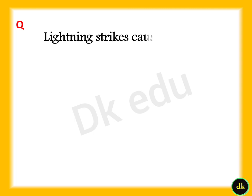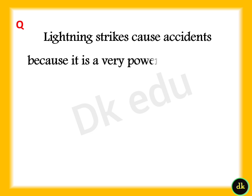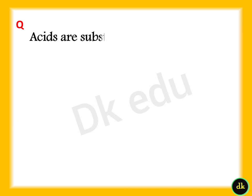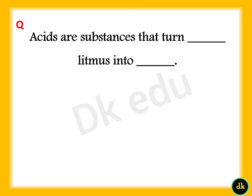Lightning strike causes accidents because it is a very powerful — Answer: Electric current. Acids are substances that turn dash litmus into dash — Answer: Blue litmus into red color.